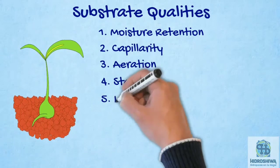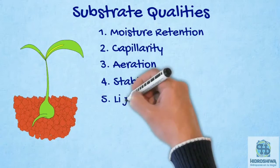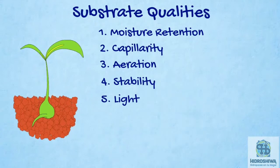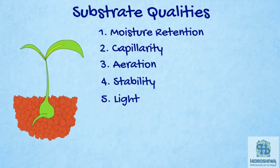The fifth property is lightness. The weight of the substrate determines the strength of the hydroponic setup. It is recommended that it should be light in order to allow easy handling.